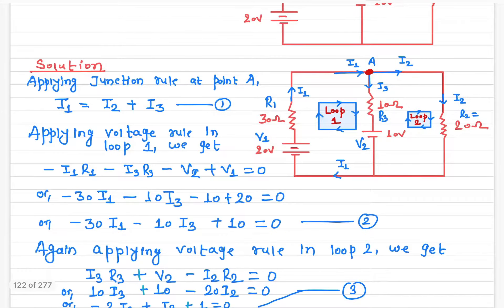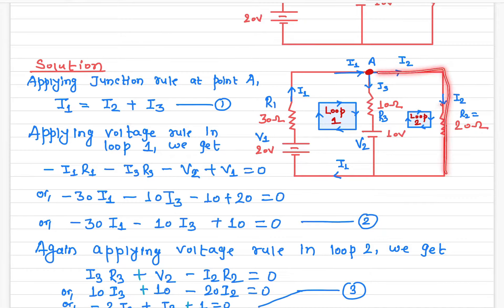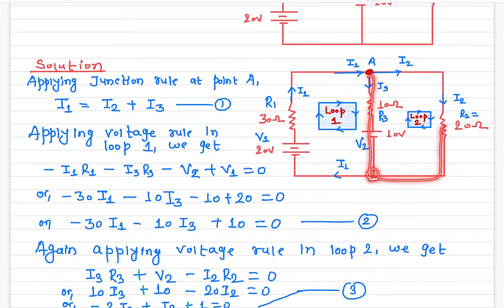The first thing while solving this kind of problem is to find out or to assume the direction of the current. Here I'm choosing this direction as I1. Then I'm considering this as I2 and this as I3. If I consider this as I2, then the current through the 20 ohm will be I2 because it has the same path. Through the 10 ohm resistor it will be I3, and at this junction I3 and I2 will add together to give I1.